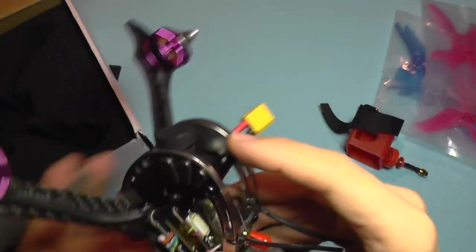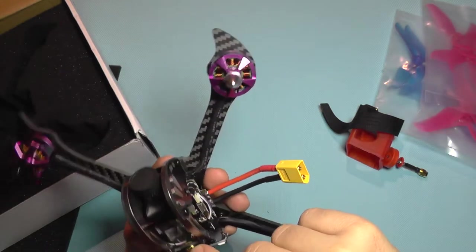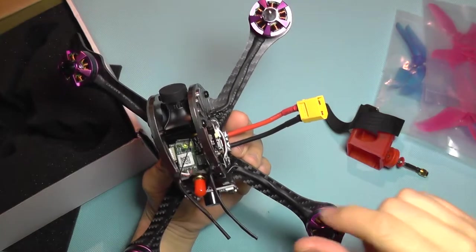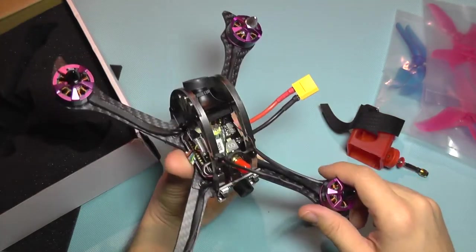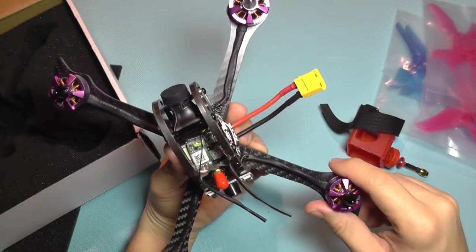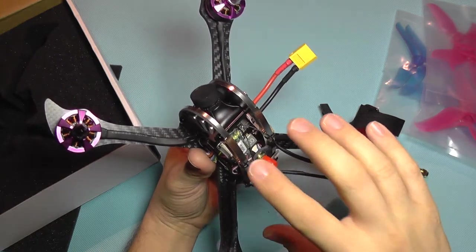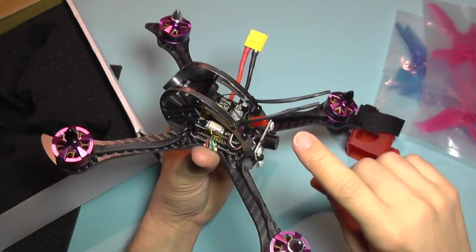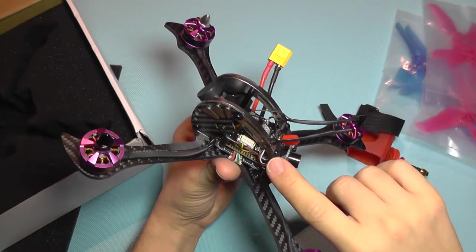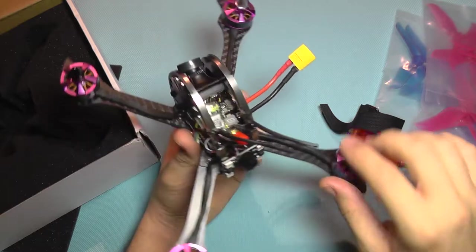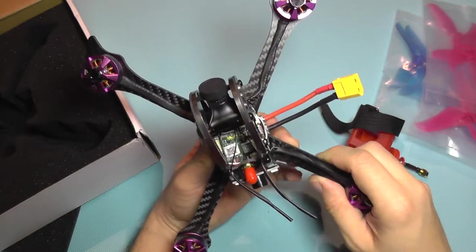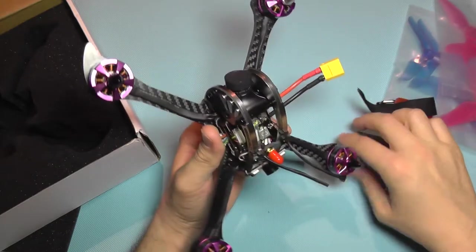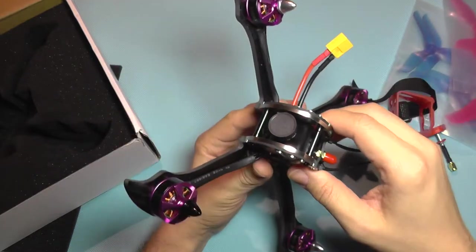It comes with a small FRSky receiver which should provide very good range, it can go up to one and a half kilometers with no problems. But it does not have S-pass and it does not provide any kind of telemetry, so you will not even have signal strength indicated on your transmitter.